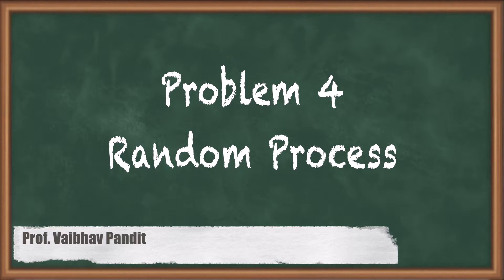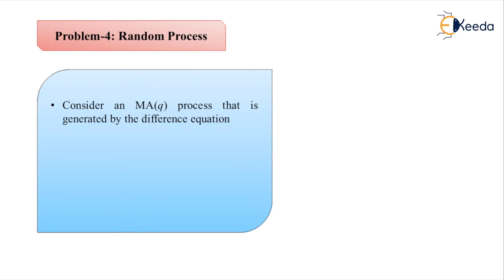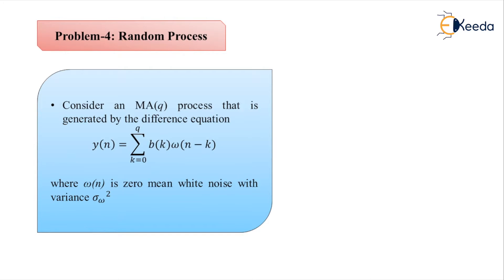This is Problem 4 for random processes. The problem statement says: consider an MA(q) process generated by the difference equation y(n) = summation from k=0 to q of b(k) multiplied by w(n-k), where w(n) is a zero-mean white noise with variance sigma_w squared.